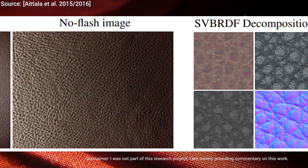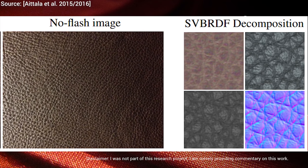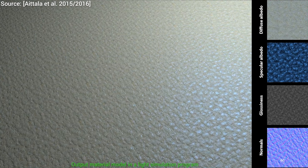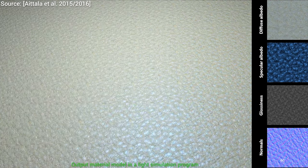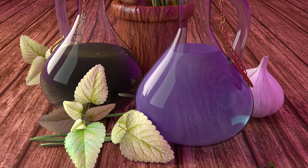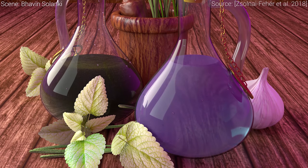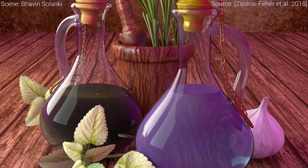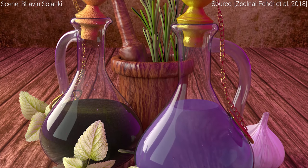We can obtain such a material from a flash and no-flash photograph pair of a target material and have a neural network create a digital version of it, or, remarkably, even just one photograph is enough to perform this. This footage that you see here shows these materials after they have been rendered by a light simulation program. If we don't have physical access to these materials, we can also use a recent learning algorithm to learn our preferences and recommend new materials that we would enjoy.